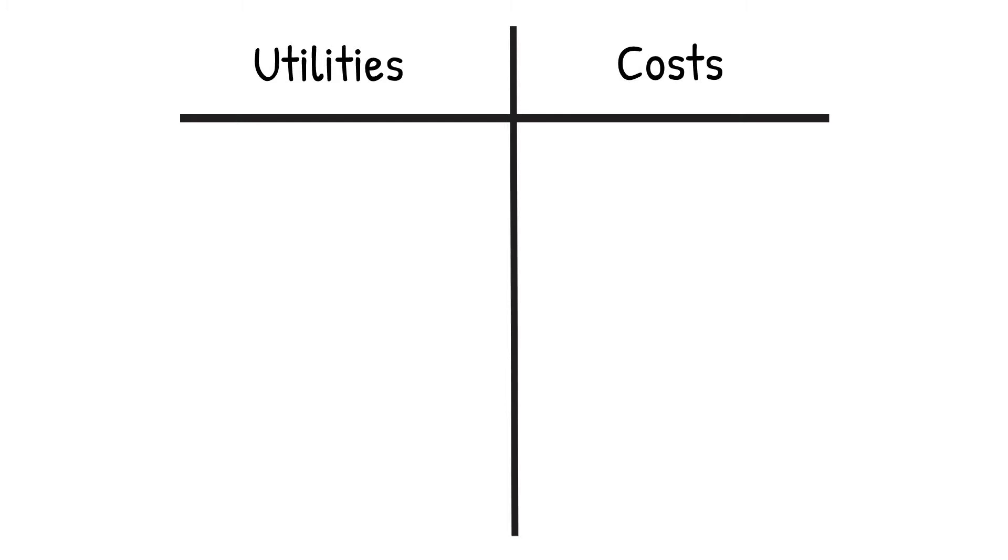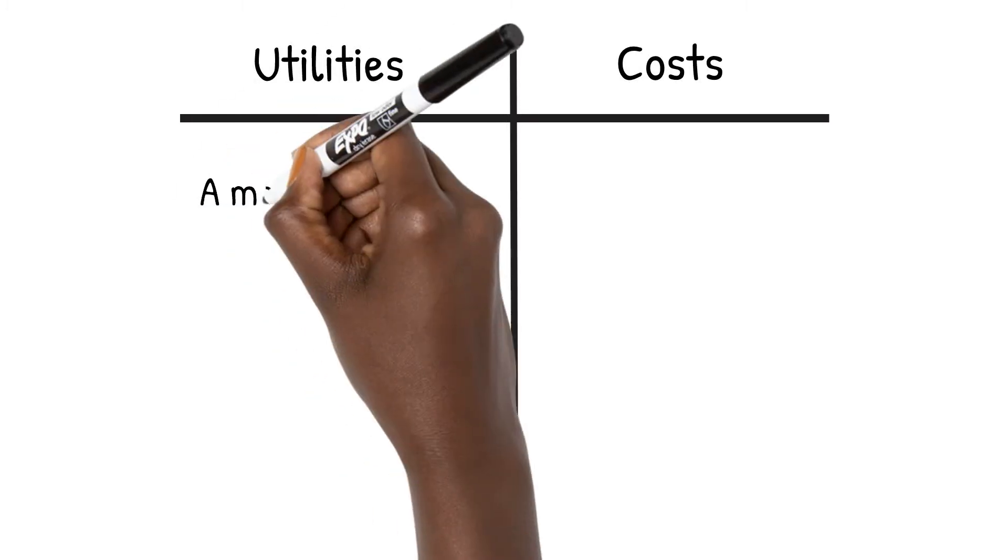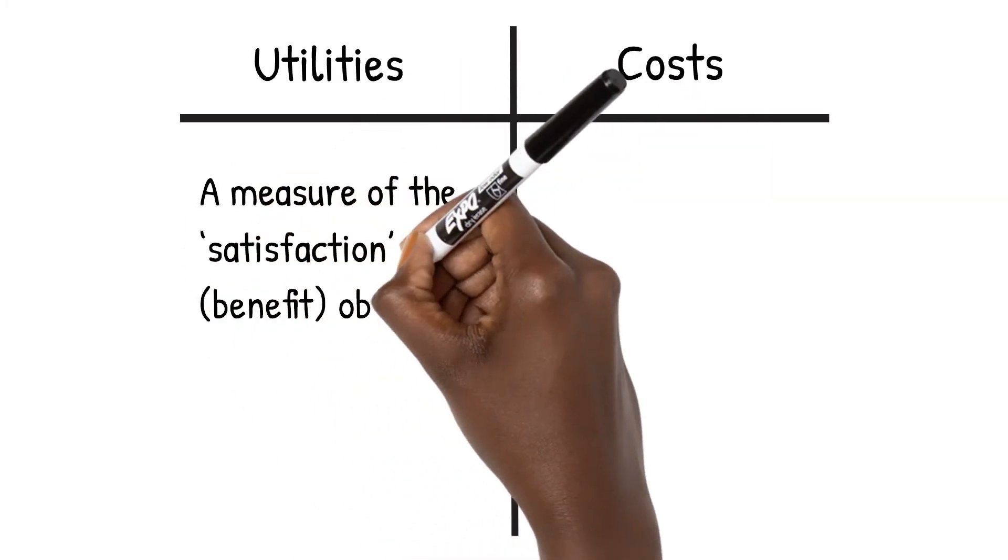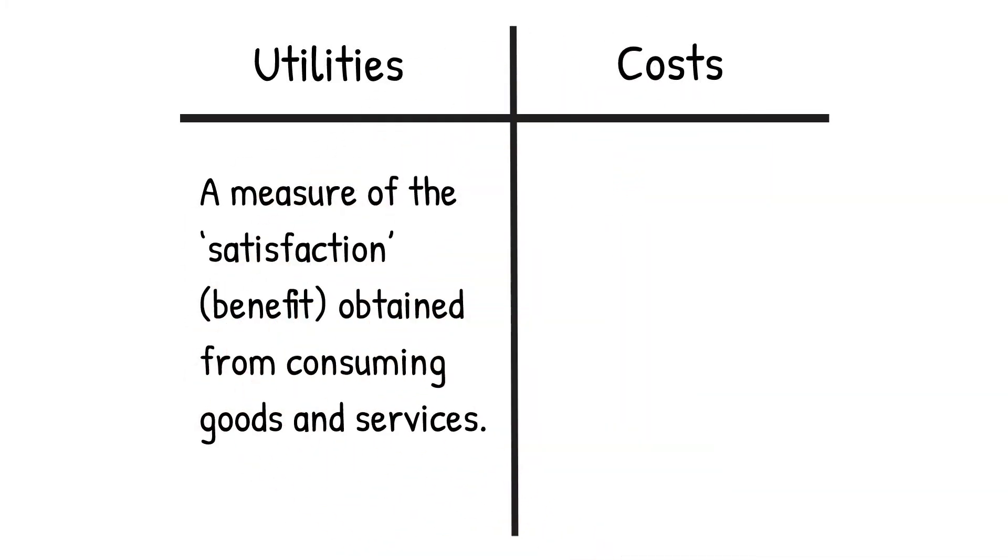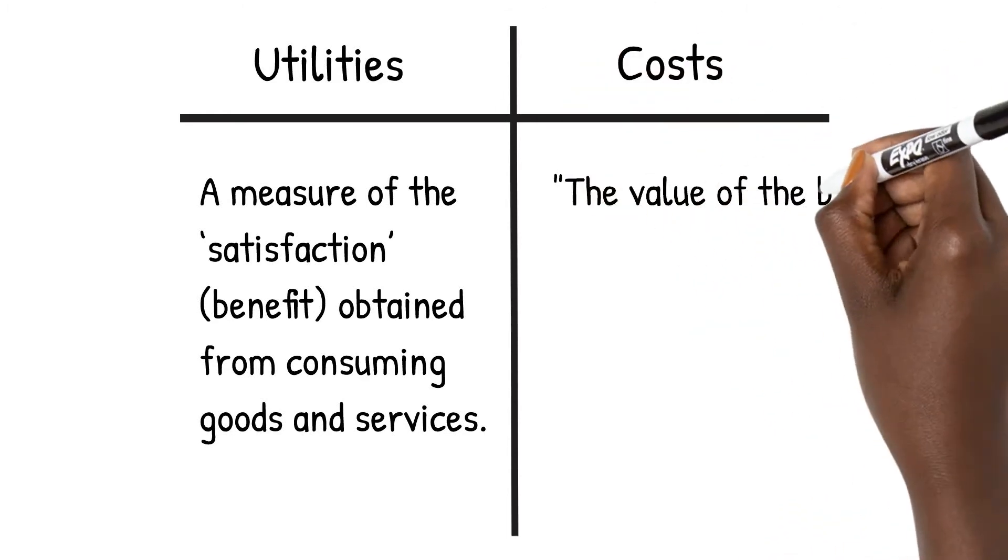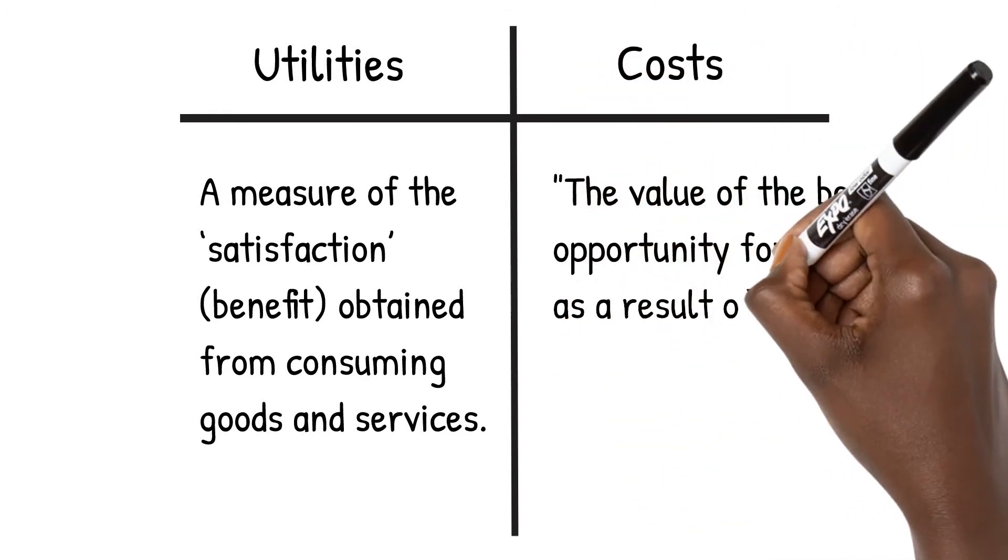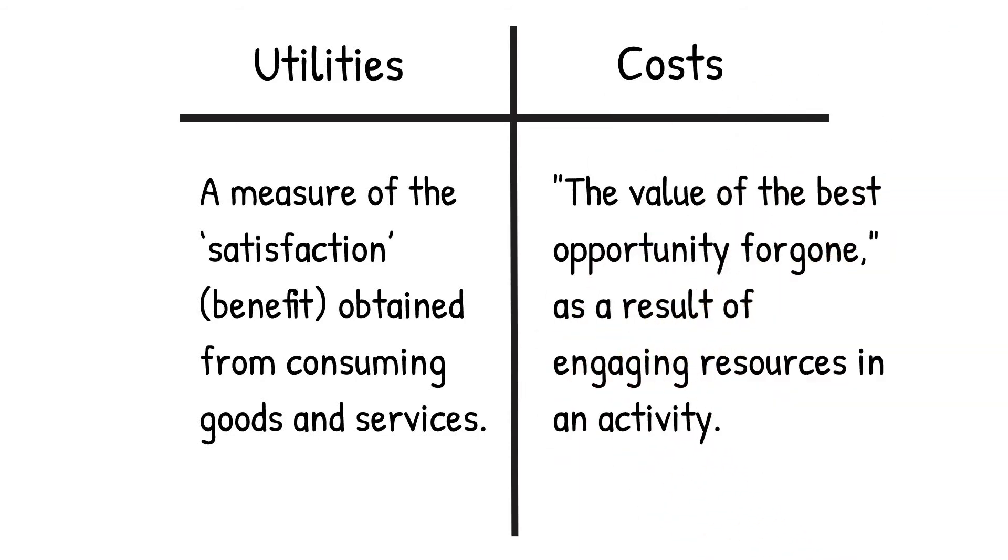Or, for the formal economists in the room, as defined by the British Medical Journal, a utility is a measure of the amount of benefit obtained from consuming goods and services. And the definition of cost is the value of the best opportunity foregone as a result of engaging resources in an activity.